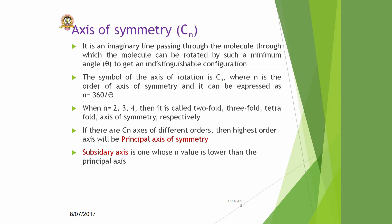Now let us look at each one. First, the axis of symmetry, with notation C_N, where C stands for circular rotation. The axis of symmetry can be defined as an imaginary line passing through the molecule about which the molecule can be rotated by a minimum angle to obtain an indistinguishable configuration. The symbol for this axis of rotation is C_N.